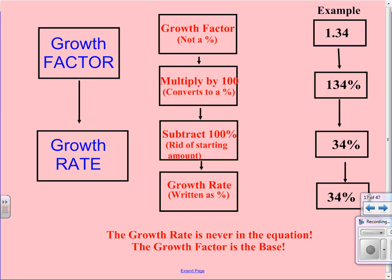So a growth factor of 1 and 34 hundredths is equivalent to a growth rate of 34%. An example would be if something increases by 34%, the growth factor would be 1 and 34 hundredths.